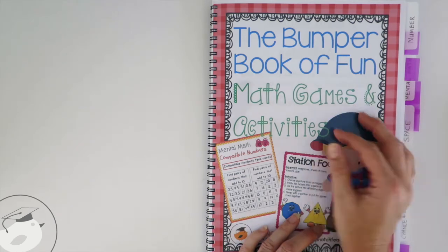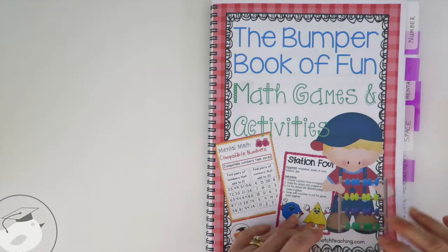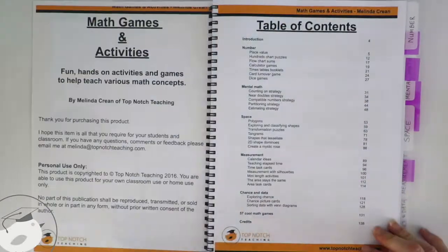When you get one of these books, it will come to you as an electronic copy, so you'll get a PDF of the book. That way you're able to print it out if you want to and bind it, or you've got each sheet to print out on an as-needs basis.